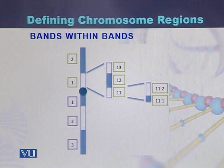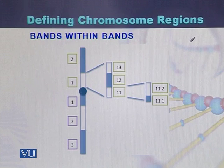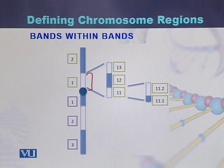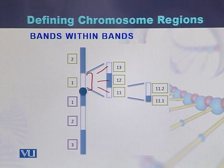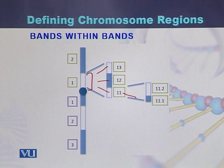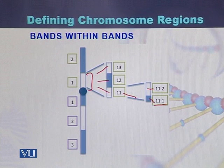Bands can also be present within bands. For example, if we magnify a band under the microscope, we see further sub-bands within it. A band may consist of three sub-bands such as 11, 12, and 13. Further magnification of band 11 reveals two sub-bands: 11.1 and 11.2.